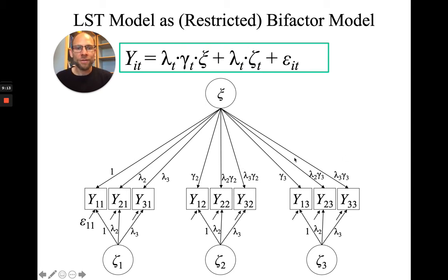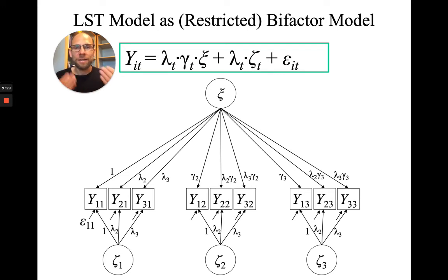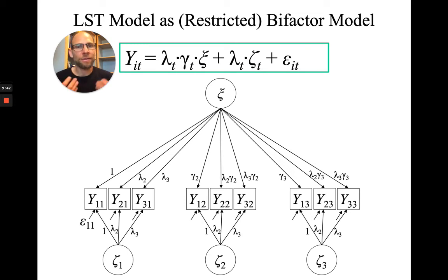For the third time point, it is similar, except you have gamma 3 as the loading on the trait. If specified this way, you get exactly the same model — the same model fit, the same parameter estimates, except you no longer directly obtain the tau parameter estimates, as those become functions of other parameters. It is the exact same model with the same degrees of freedom and same model fit.